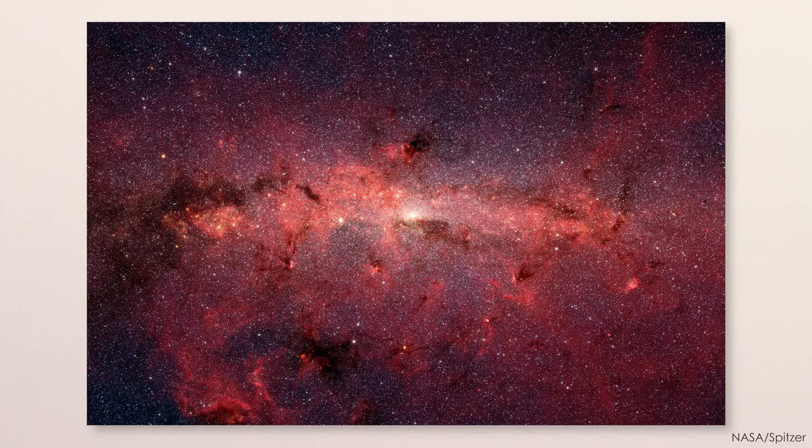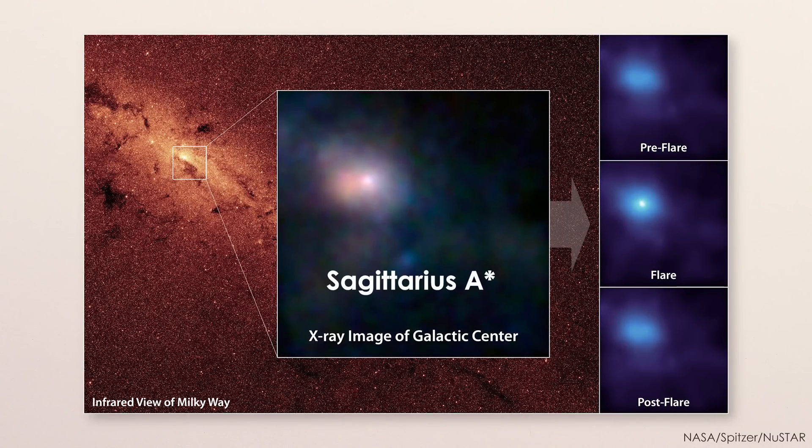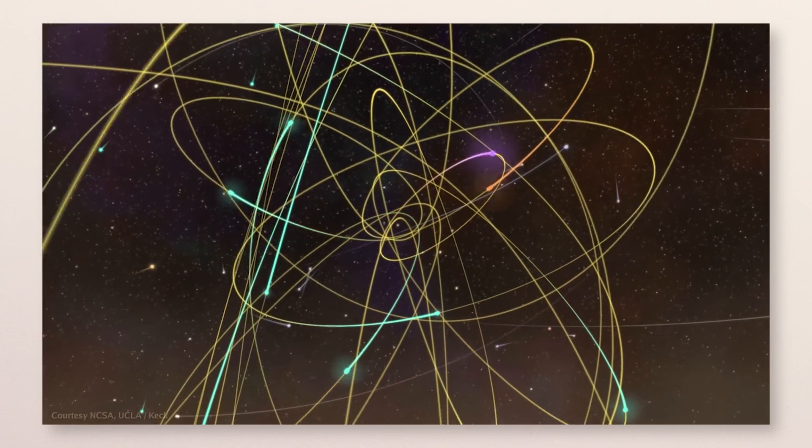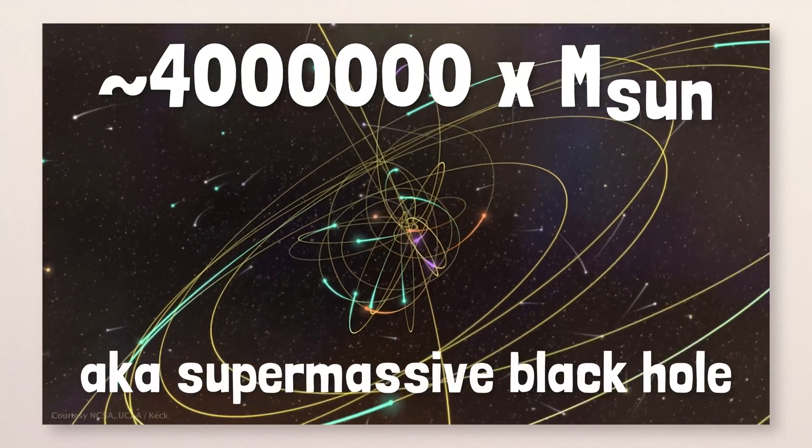For example, in the middle of our Milky Way galaxy there's an X-ray, radio wave, and infrared-emitting object called Sagittarius A star, with nearby stars orbiting it in such small, fast orbits that we know it weighs 4 million times as much as the Sun.